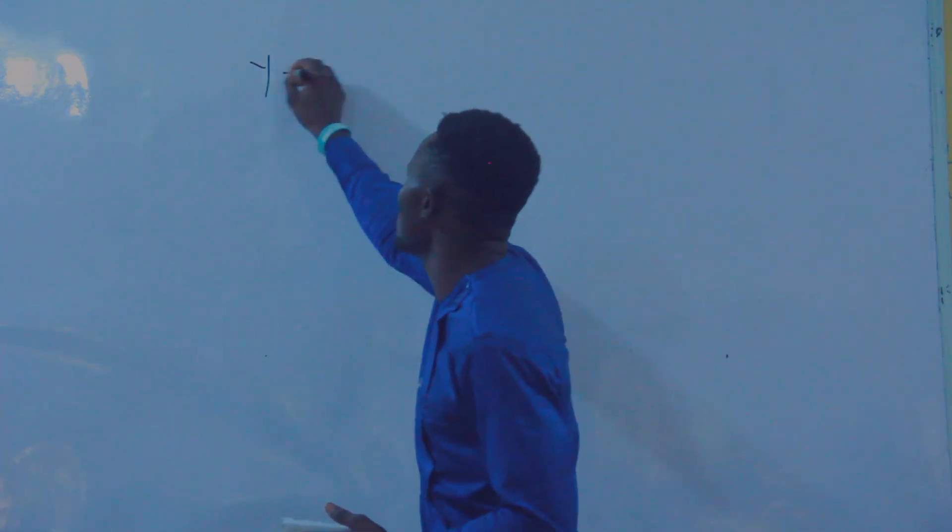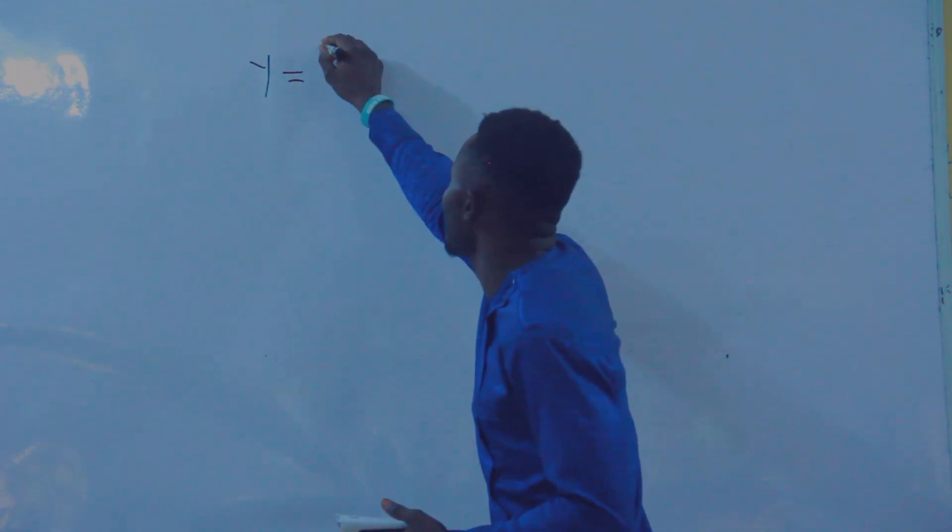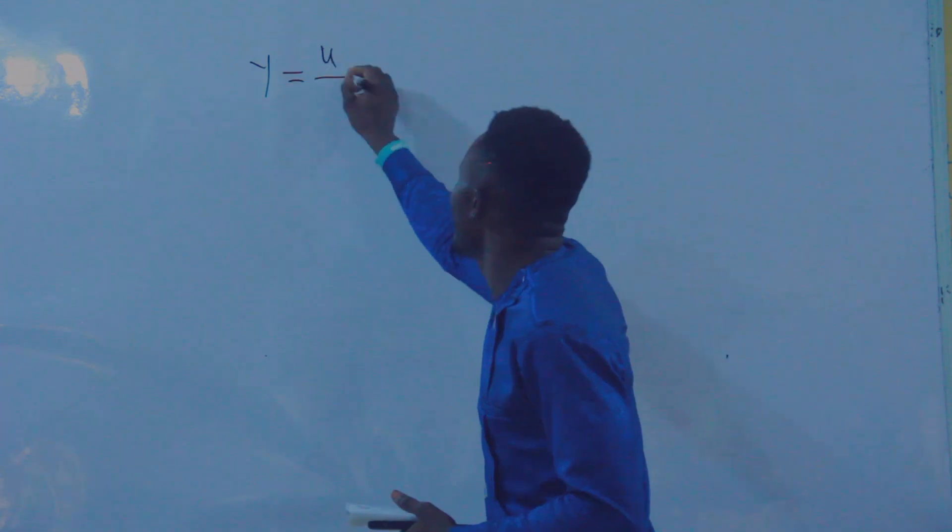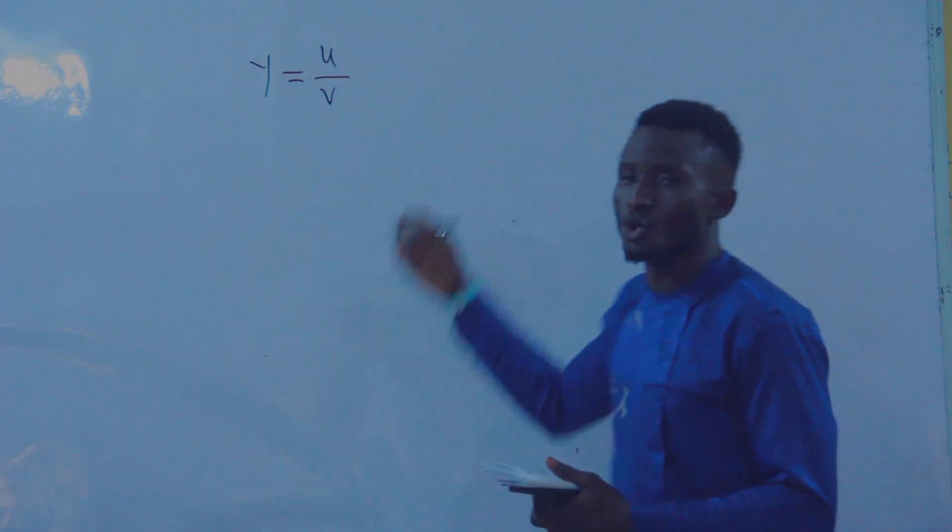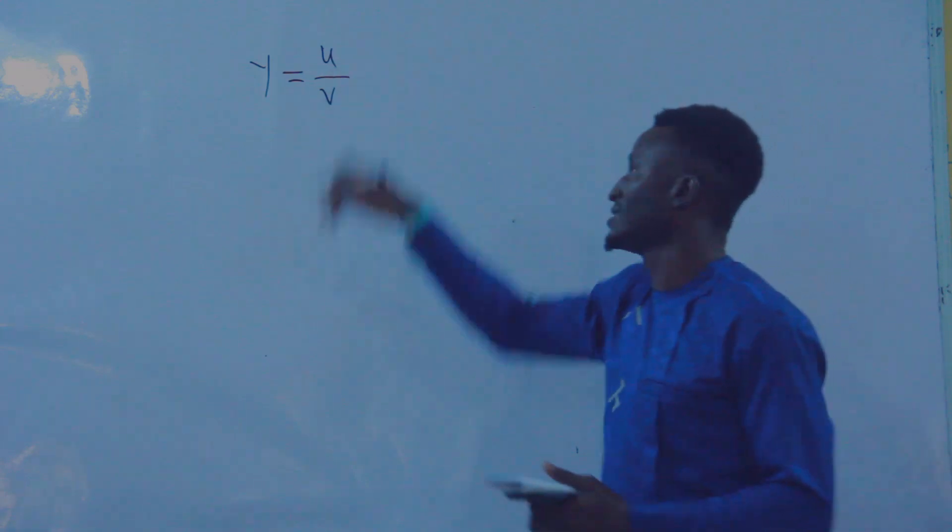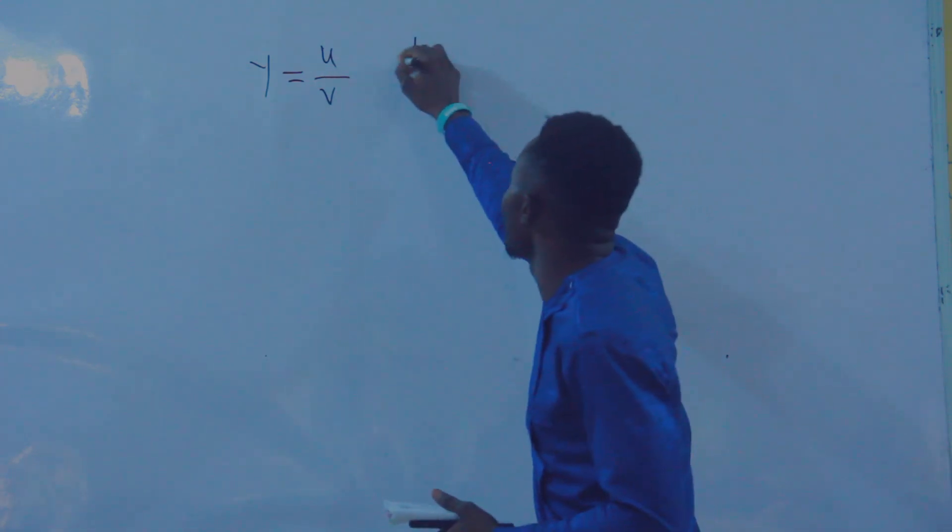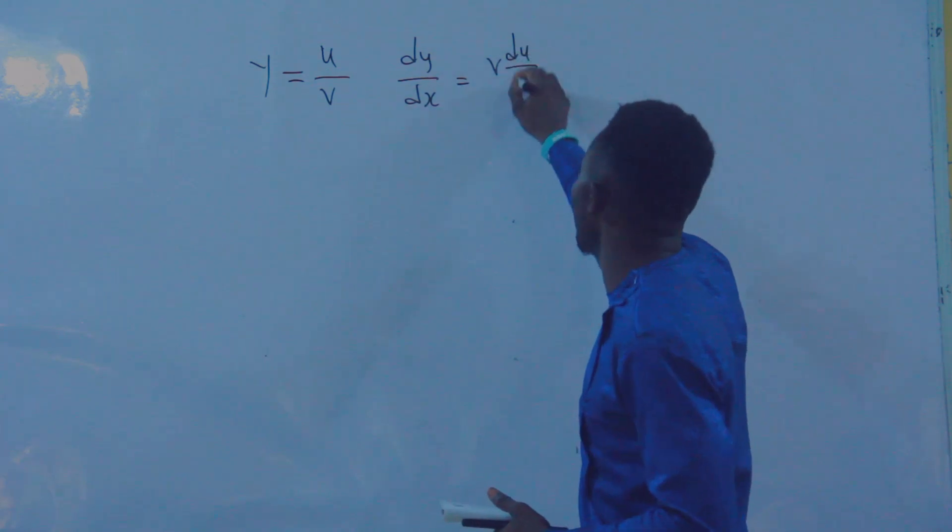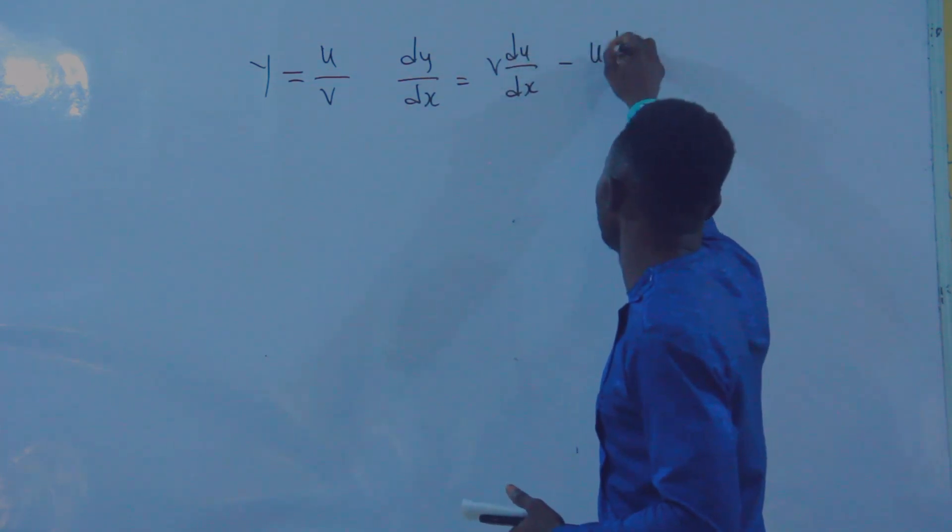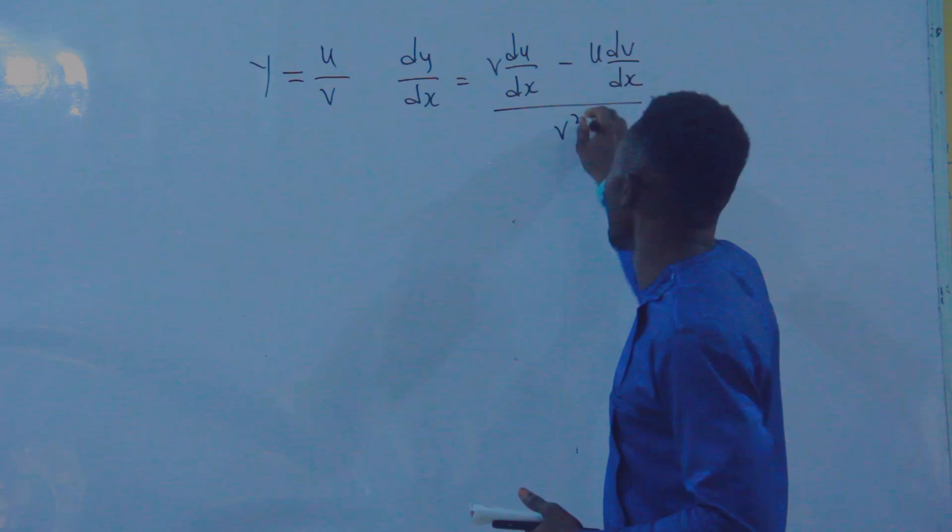Now, how do we deal with quotient? When we are talking about quotient, you have been given y to be equal to one function of x at the numerator and another function of x at the denominator. The formula says dy/dx is equal to v times du/dx minus u times dv/dx, all over v squared.